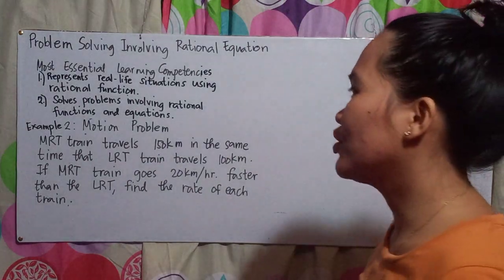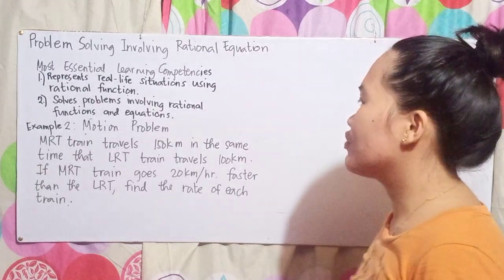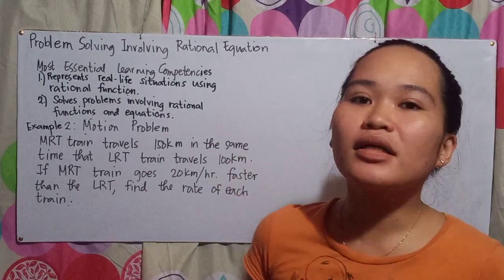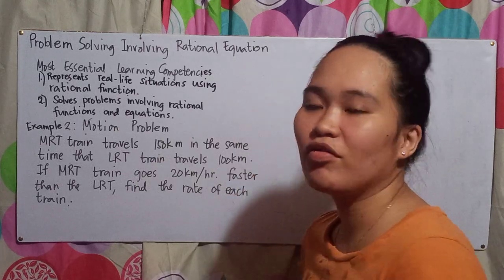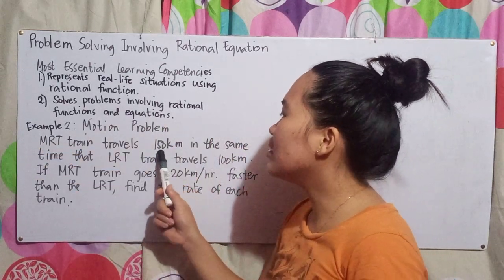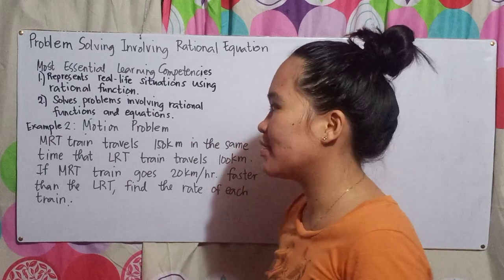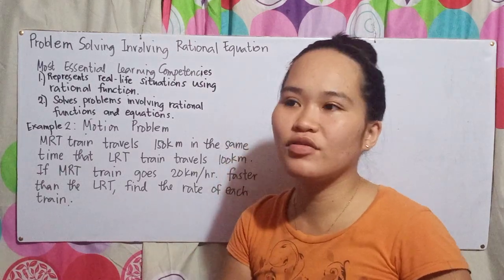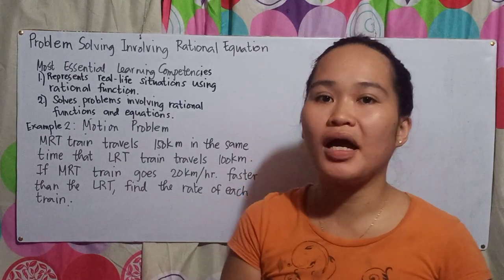Let's proceed to Example 2 — a motion problem. The problem is: an MRT train travels 150 km in the same time that an LRT train travels 100 km. They travel at the same time, but MRT is faster — it travels 150 km while LRT travels 100 km in the same duration. If MRT goes 20 km per hour faster than the LRT, find the rate of each train.